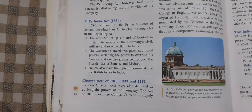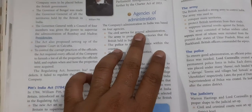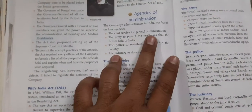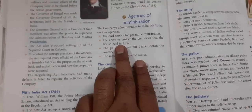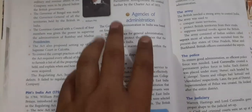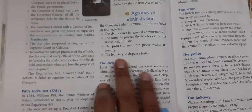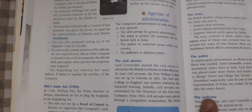After Pitt's India Act, a few other acts came — the Charter Acts of 1813, 1833, and 1853 — which brought further improvements. The company's administration in India was based on four agencies: the civil service for general day-to-day administration; the army to protect territories; the police to maintain peace within the country; and the judiciary to look after law and order.